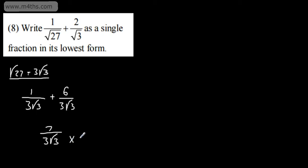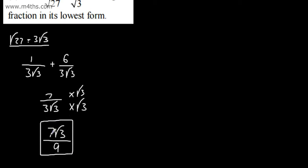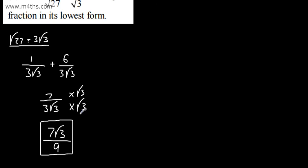By convention, we now rationalize the denominator of the fraction by multiplying the numerator and the denominator by the root 3 value. That's going to give me 7 root 3, and then 3 times by 3 which is 9. If it was worth 3 or 4 marks, I would be very careful in terms of the steps that I show, so you might want to write that this is 3 times by 3. That's one approach.